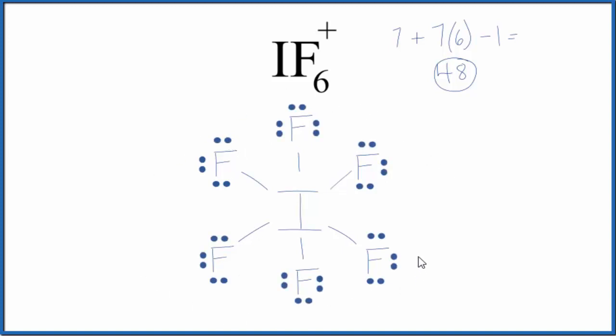At this point, we've used all 48 valence electrons. Each fluorine atom has an octet: 2, 4, 6, 8.